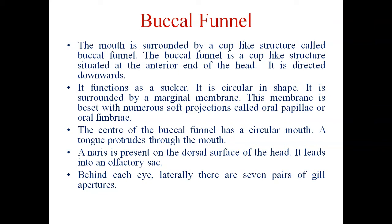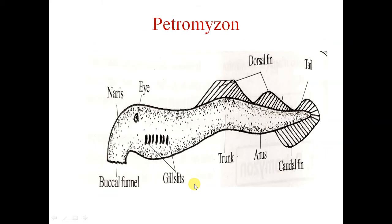The center of the buccal funnel has a circular mouth, and a tongue-like structure protrudes through the mouth. A single naris is present on the dorsal surface of the head and leads into an olfactory sac. Behind each eye, laterally, there are seven pairs of gill slits.